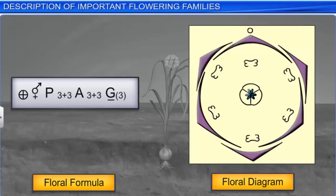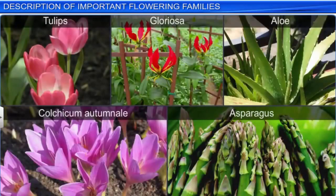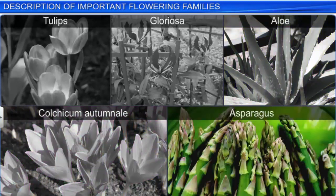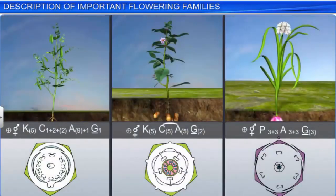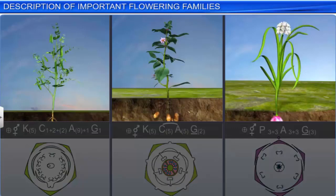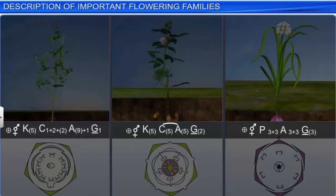Plants like tulips and gloriosa belonging to the Liliaceae family are ornamental plants. Some like aloe and colchicum autumnale are used as medicines, and asparagus is used as a vegetable. Therefore, the description of a flowering plant includes its vegetative characters, floral characters, floral formula, and floral diagram, and provides vital information about the plant.